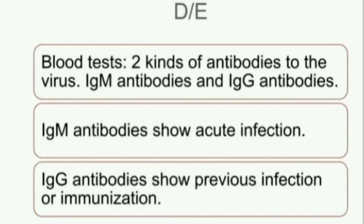Diagnosis via blood tests involves two kinds of antibodies: IgM antibodies and IgG antibodies. IgM antibodies indicate acute infection, while IgG antibodies indicate previous infection or immunization. Normally, both IgG and IgM are used to evaluate the results.